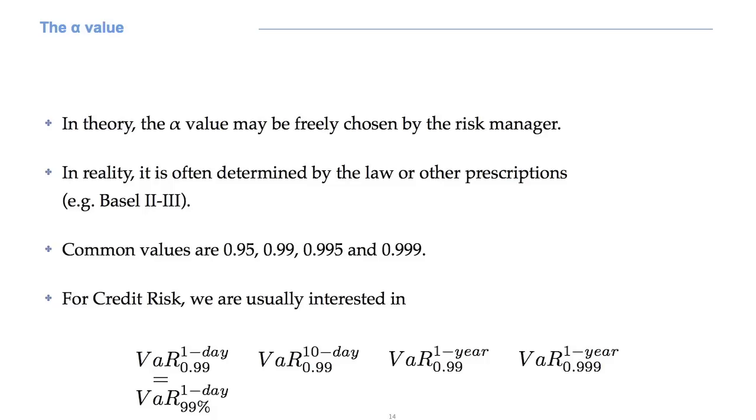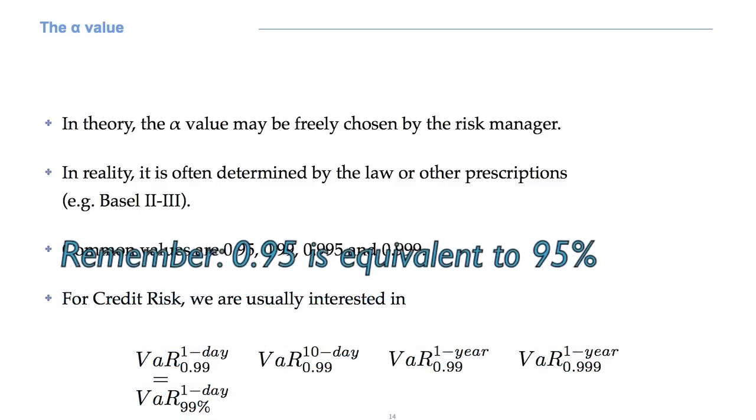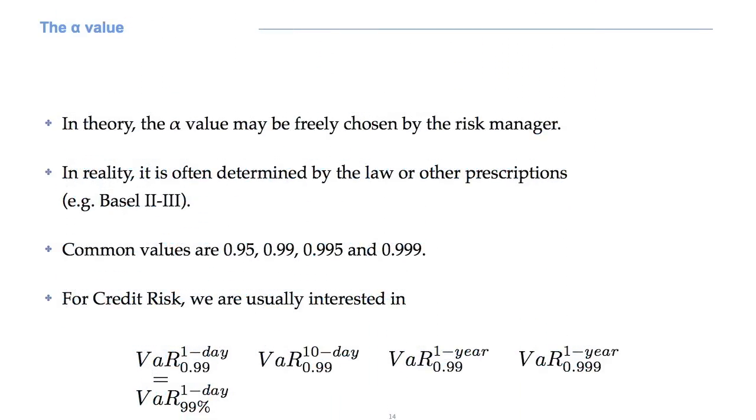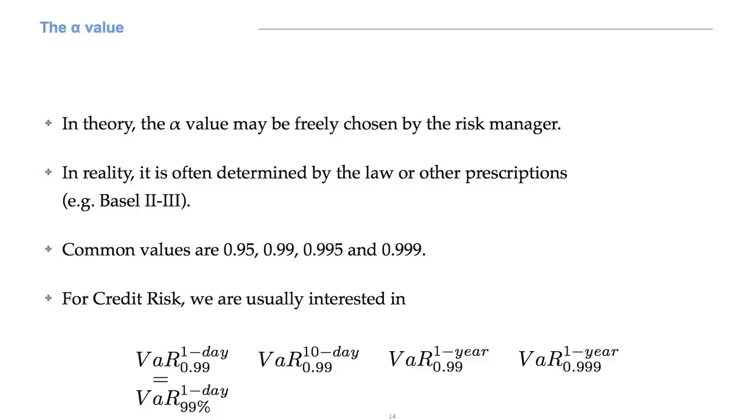The alpha value, from a theoretical point of view, may be freely chosen by the risk manager. In reality, it is often determined by law or other prescriptions. Common values are 0.95 or 95%, 0.99 or 99%, 0.995 or 99.5% and 0.999 or 99.9%.